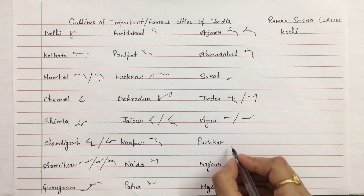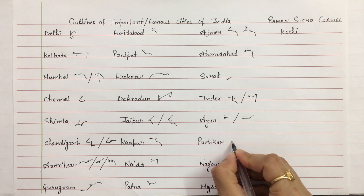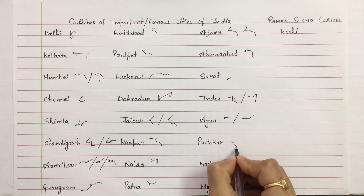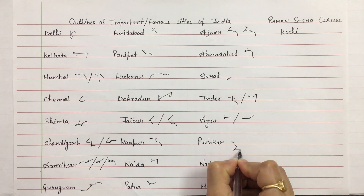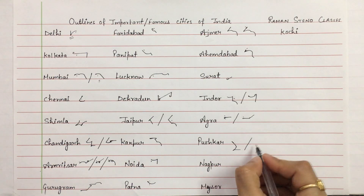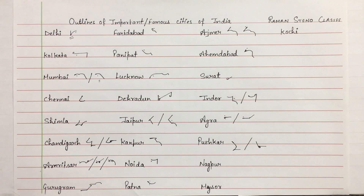Pushkar — below the line. Ish, and employing hook R with K. Pushkar. Or you can also write it this way. Pushkar.